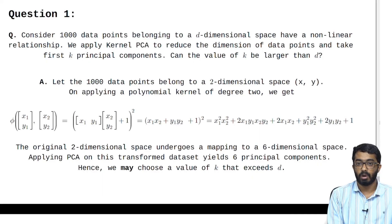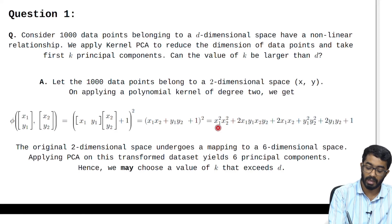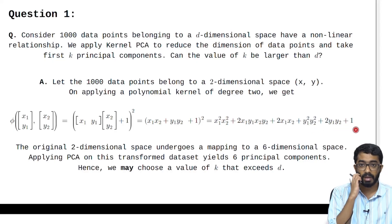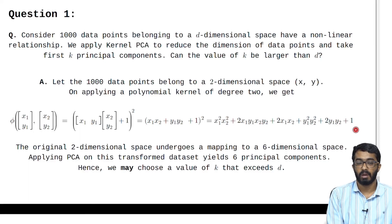Let the 1000 data points belong to a two-dimensional space (x, y). On applying a polynomial kernel of degree 2 we get phi of (x_1, y_1) and (x_2, y_2). So we apply it to that and we finally get our output to be this. As you can see this output has 6 components. Therefore the number of PCs that can be chosen range from 1 to 6. And as it can range from 1 to 6 it can be greater than d which is equal to 2.